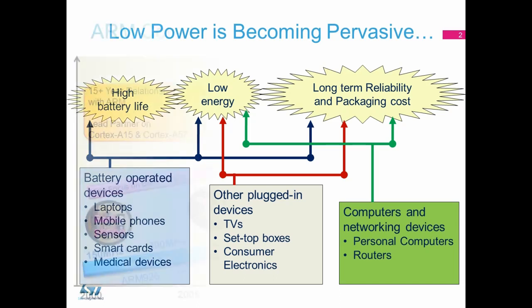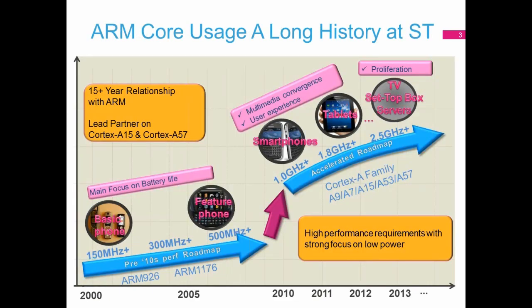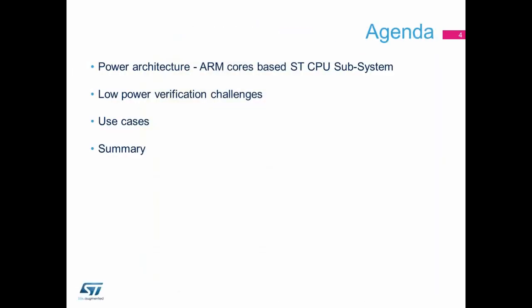ST has had a very long relationship with ARM-based CPU subsystems — more than 15 years. With the advent of smartphones, tablets, and high-end set-top boxes, we have demonstrated clock speeds in excess of 2.5 GHz. But was all of this possible without using low power techniques? The answer is no. In this talk, we will focus on the low power features we have implemented in our subsystems, and the verification complexity that it has brought along with it.